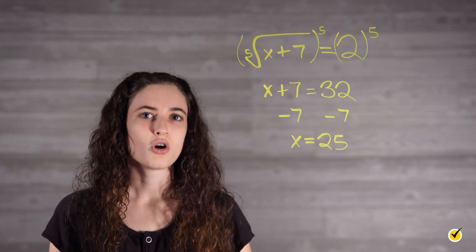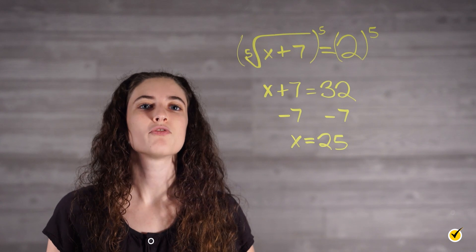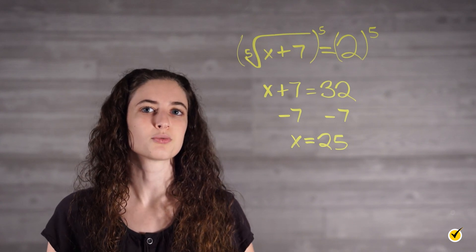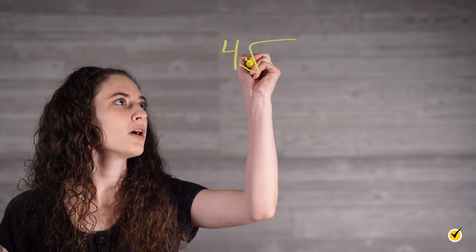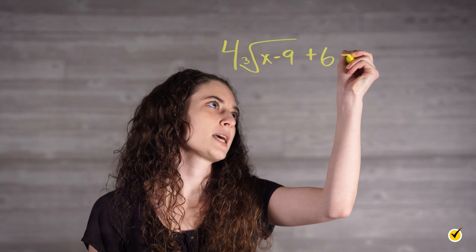What if the root isn't the only thing on the left side of our equation? If that's the case, then we need to follow the order of operations backward to get rid of everything until the root is by itself. Consider the following example. 4 times the cube root of x minus 9 plus 6 equals 18.